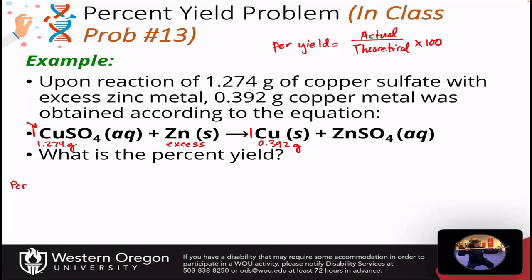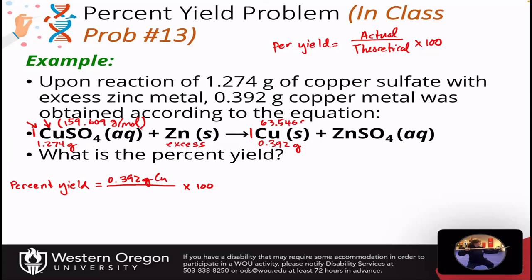We've been given the actual yield, which is 0.392 grams of copper, and we need to calculate the theoretical so we can put it on the bottom of that equation, then multiply by 100 to get our percent yield. We need the molar mass of copper sulfate, which is adding up the molecular weight of 1 copper, 1 sulfur, and 4 oxygens. That gives us 159.609 grams per mole. We'll also need the molar mass of copper, which is 63.546 grams per mole.